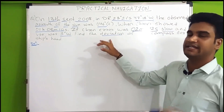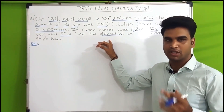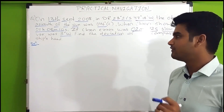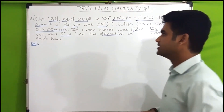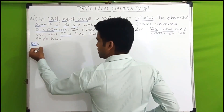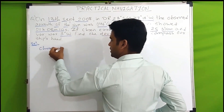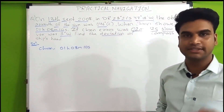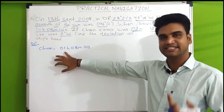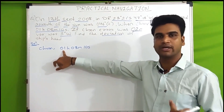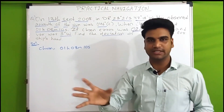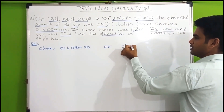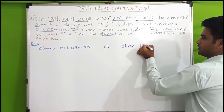To find the deviation we first need the compass error. So first we will find the correct date and time of GMT. The chronometer is showing 01h 08m 10s, but the chronometer doesn't show 24-hour format, so we don't know whether it's 1 AM or 1 PM GMT. We will assume both conditions — we will consider both 01 hours and 13 hours.